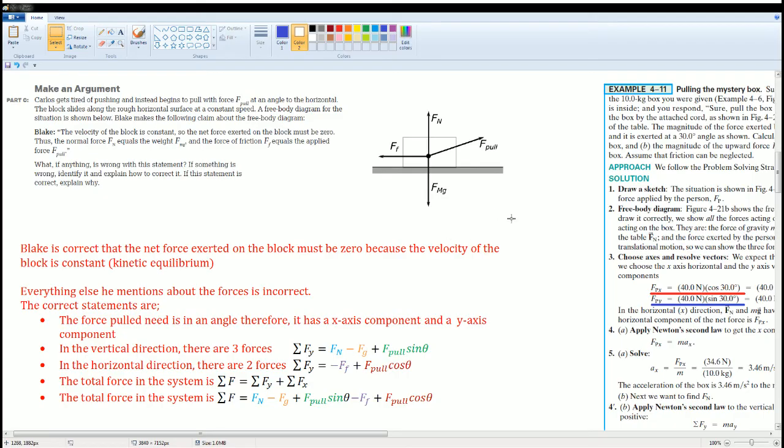This is what I wrote. One, I would state what Blake did correctly. So Blake is correct that the net force exerted on the block must be zero because the velocity of the block is constant. That is called kinetic equilibrium, so the a is equal to zero. In that case, everything else he mentioned about the forces is incorrect.